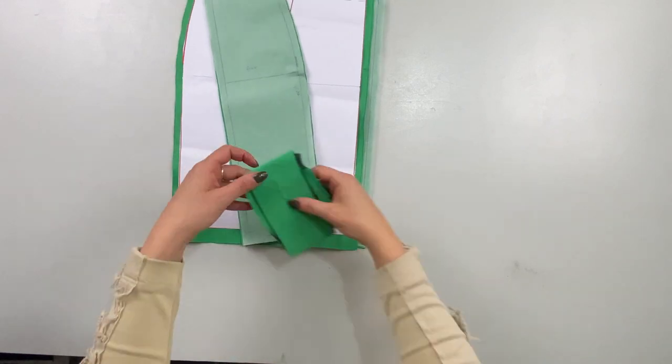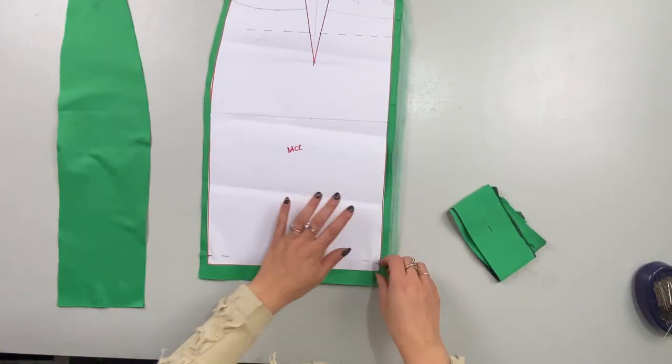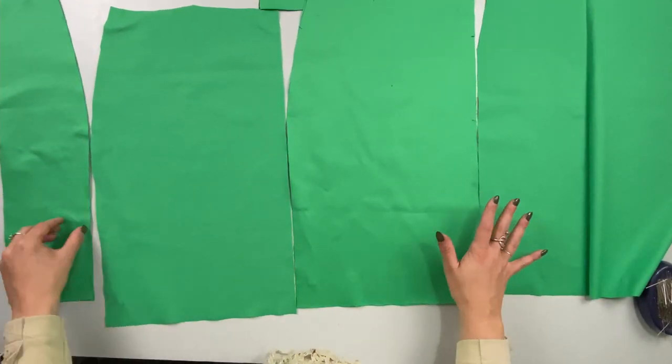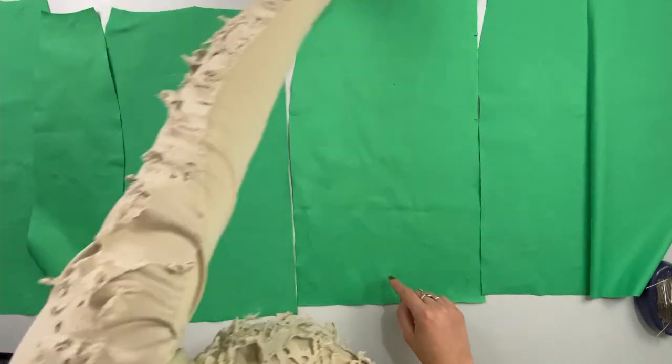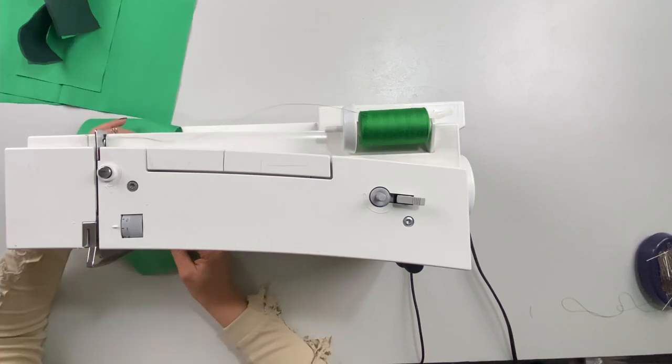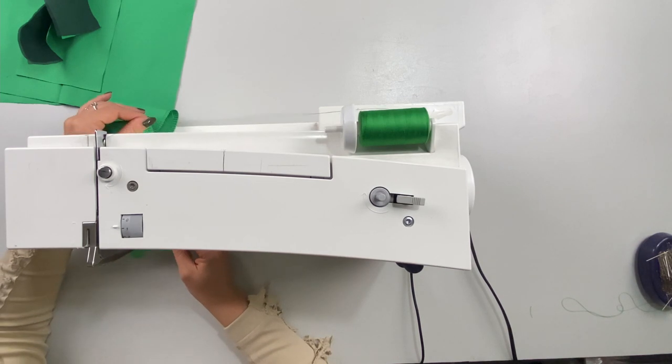Now before the cut out pieces are sewn together, I need to make sure that the edges will not fray. So I will frame them all with a stitch that resembles an overlock stitch. If you have an overlocker feel free to use that one instead. It will take a while to frame all the pieces, but I promise you it is worth it.